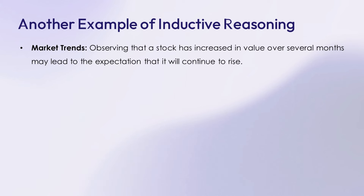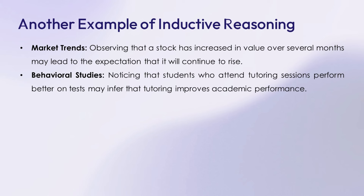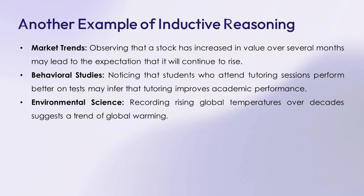Number 6: market trends — observing that a stock has increased in value over several months may lead to the expectation that it will continue to rise. Number 7: behavioral studies — noticing that students who attend tutoring sessions perform better on tests may infer that tutoring improves academic performance. Number 8: environmental science — recording rising global temperatures over decades suggests a trend of global warming.